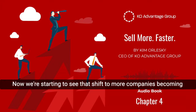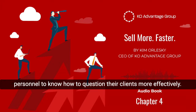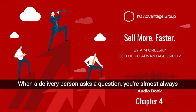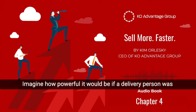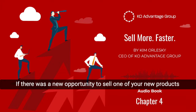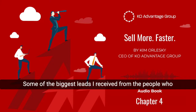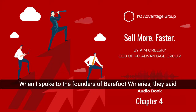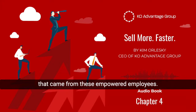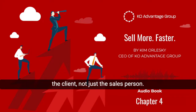When I worked for companies such as Xerox and American Express, even the president and vice presidents of those organizations had their own sales targets to achieve and clients to manage. Revenue generation should be everybody's responsibility. Now we're starting to see that shift — more companies are becoming first and foremost sales companies, empowering their staff to have more client relationships. I've seen manufacturers train their delivery personnel to question their clients more effectively. Delivery people are seen as reliable, and when a delivery person asks a question, you're almost always receiving honest answers. Imagine how powerful it would be if a delivery person was asking the right questions and relayed back to your sales team if there was a new opportunity to sell one of your new products or services. Sales skills and helping to generate leads should be the responsibility of every person who has an interaction with the client, not just the salesperson.